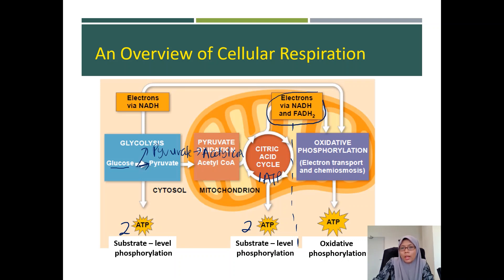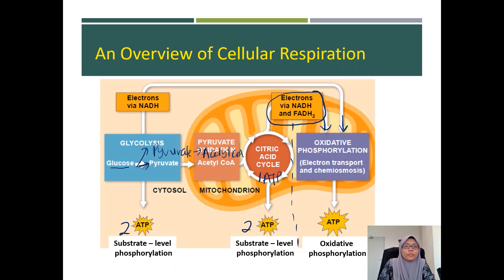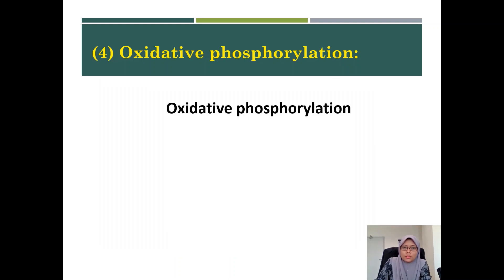But what we have the most is the number of NADH and FADH2 produced. These two electron carriers are going to enter oxidative phosphorylation, and they are going to make the most number of ATP out of this pathway through the process of oxidative phosphorylation.